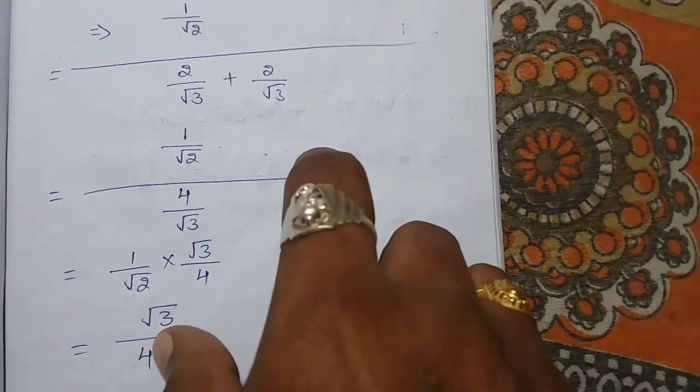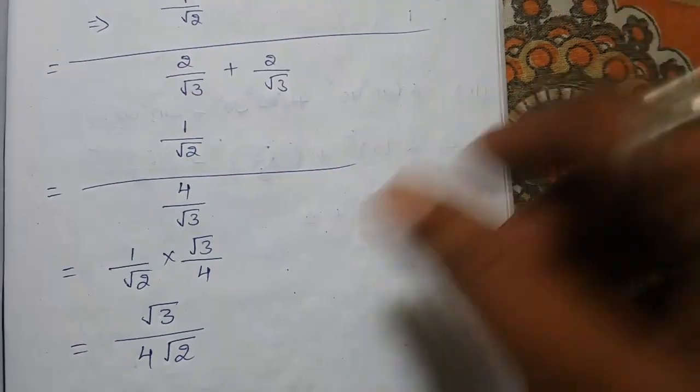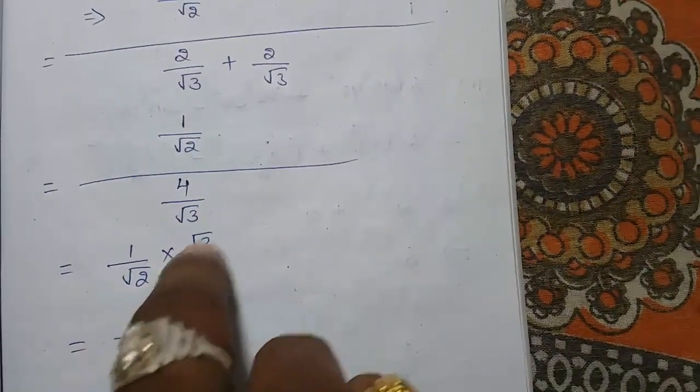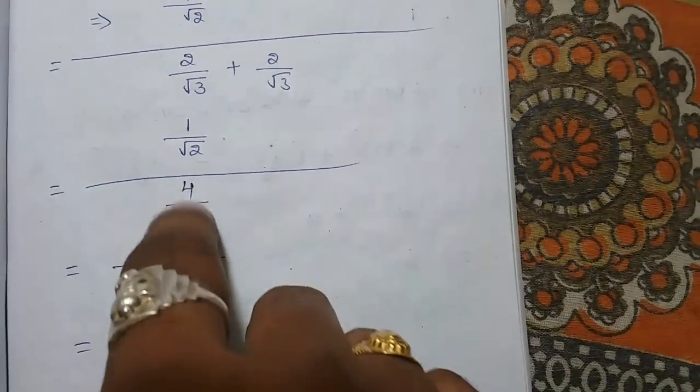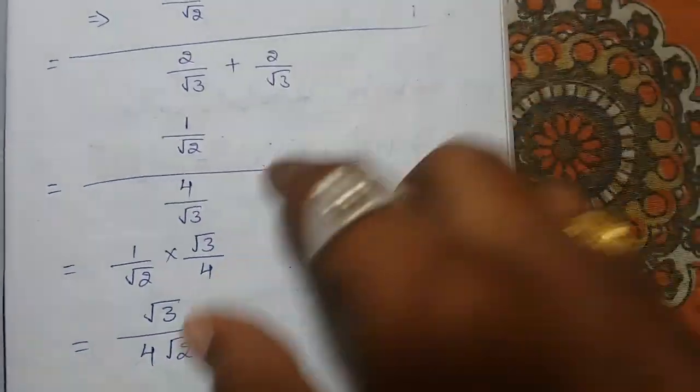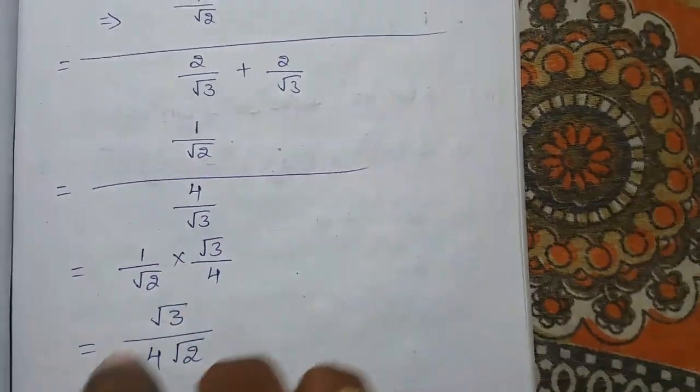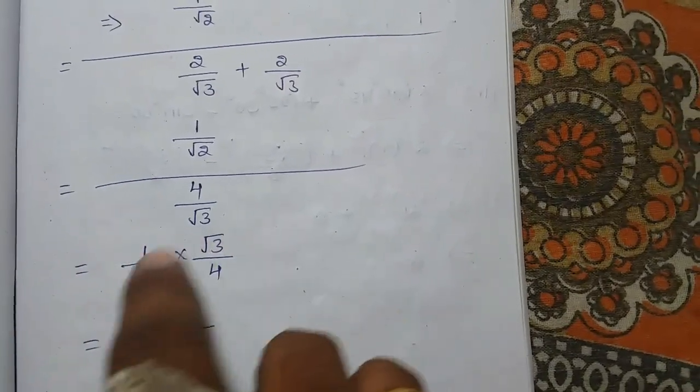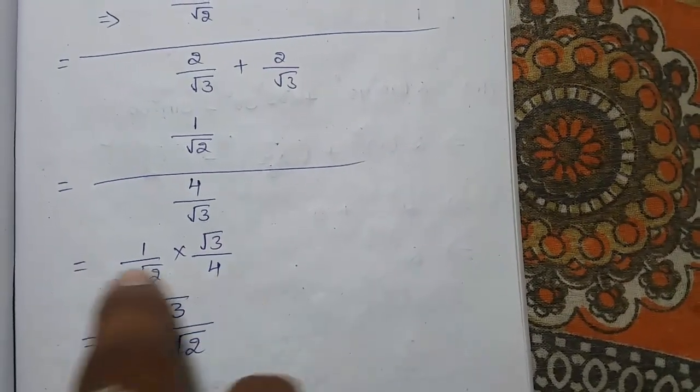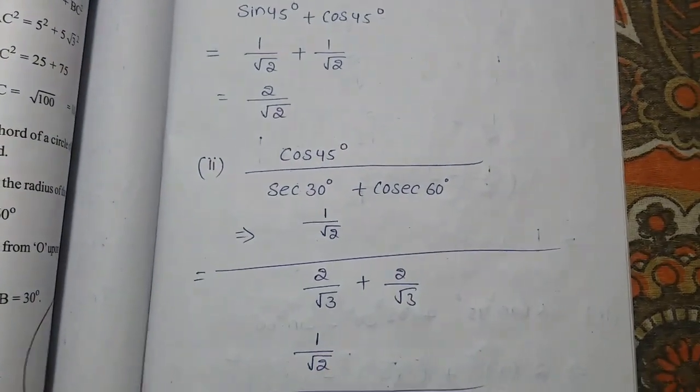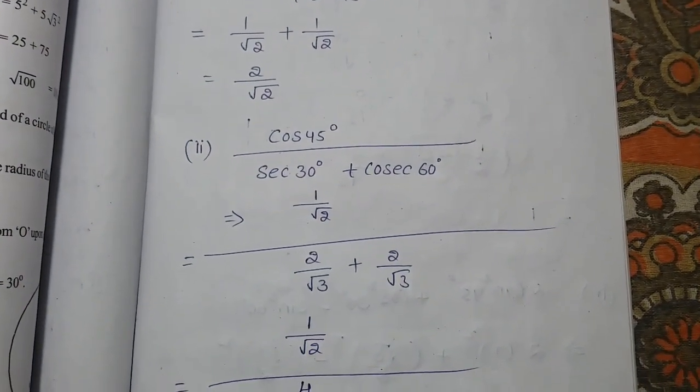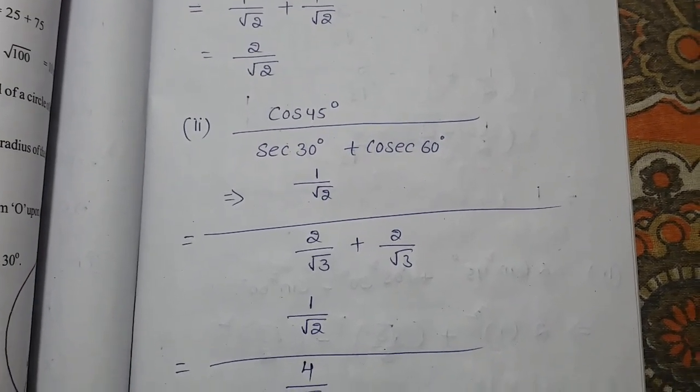This denominator fraction is going to numerator, it will become reverse, that is 1 by root 2 into root 3 by 4. 4 by root 3 is there, now it will become reverse, root 3 by 4. Here 1 into root 3 is nothing but root 3 by 4 into root 2. This is the value of cos 45° by secant 30° plus cosecant 60°.